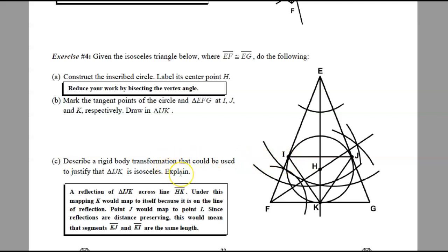So describe a rigid body transformation that could be used to justify the IJK as isosceles. So because I have line HK running this way, I could do a reflection of IJK across that line. K would map onto itself because it's on the line. J would map onto I. And this, because they're distance-preserving, we would have segment KI and segment KJ be the same length. So that's the rigid transformation that does that.